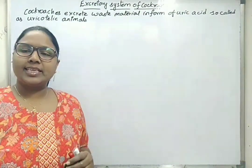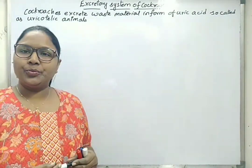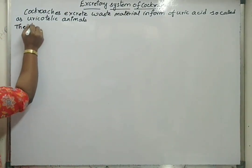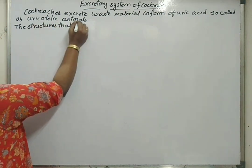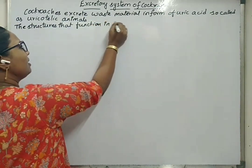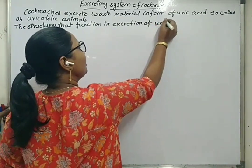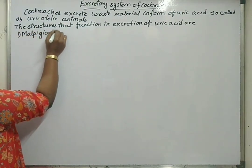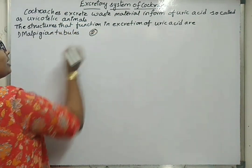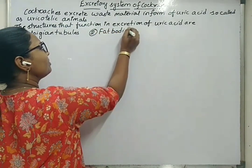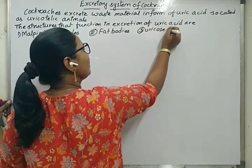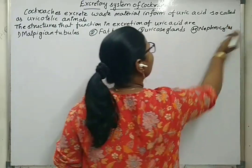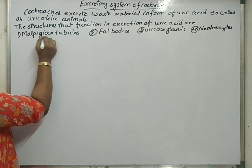There are many structures that support excretion in cockroach. Some of them are Malpighian tubules, fat bodies, uricose glands, and nephrocytes. The structures that function in excretion of uric acid are: first, Malpighian tubules; second, fat bodies; third, uricose glands; fourth, nephrocytes; and fifth, cuticle, which also supports excretion.